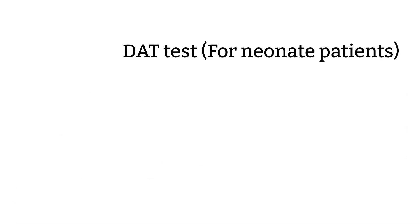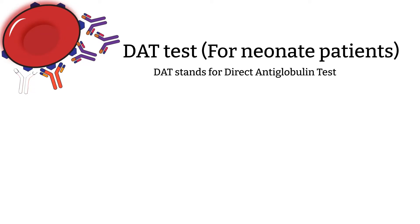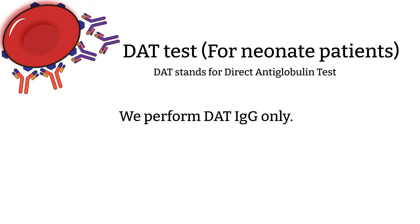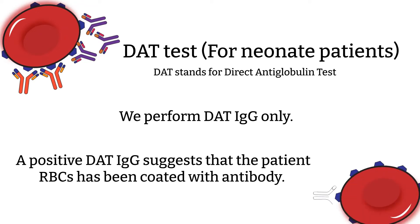The next test performed as part of the neonate workup would be the DAT test. DAT stands for Direct Antiglobulin Test. For adult patients, again defined as 4 months and older, the DAT test is a totally separate order. But for neonate patients, this test is often ordered together as part of the neonate workup. If you would like to learn more about DAT, you know what to do. For neonate patients, we would perform DAT IgG only. This test will tell you if the baby's RBCs are coated with antibody or not. A positive DAT IgG suggests that the patient's RBCs have been coated with antibody — it could be any antibody, not necessarily ABO incompatibility.